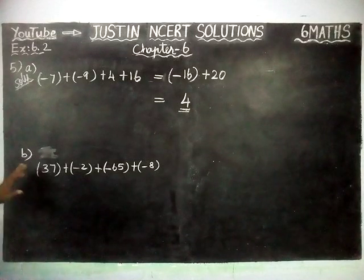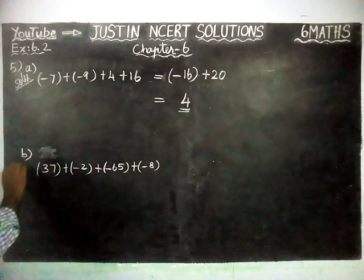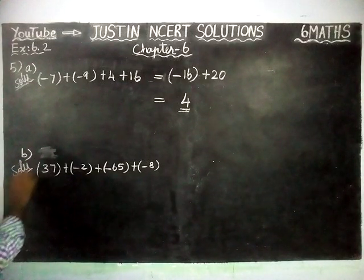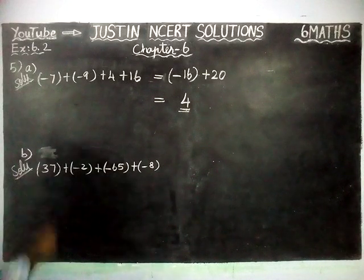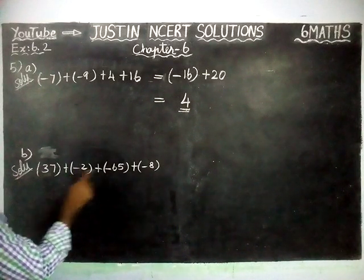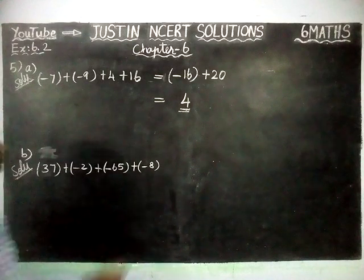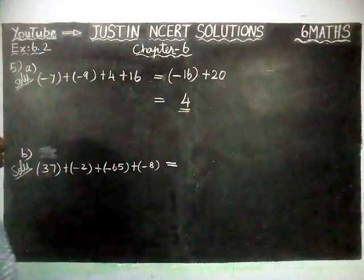Now, we are going to solve part B. So, we are going to add these 3 numbers. And here, 1 positive number, 3 negative numbers are there. So, we will add the negative numbers first.